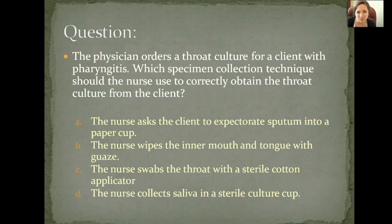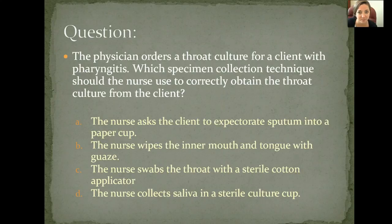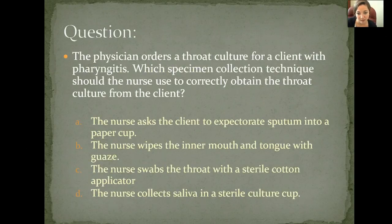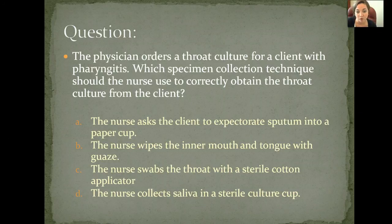Here's a practice question: A physician orders a throat culture for a client with pharyngitis. What specimen collection technique should the nurse use to correctly obtain the throat culture? The answer is C — the nurse swabs the throat with a sterile cotton applicator. It has to be sterile. Remember that.